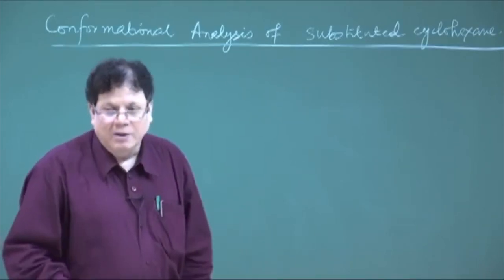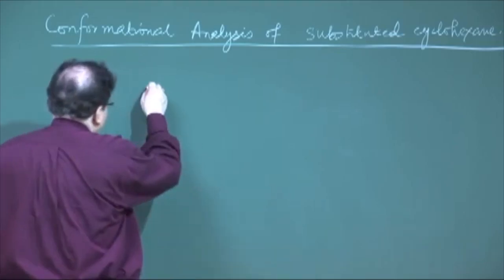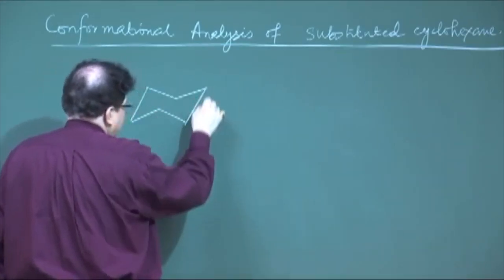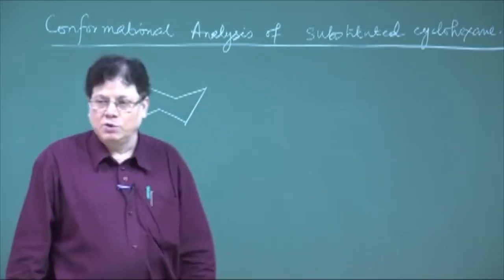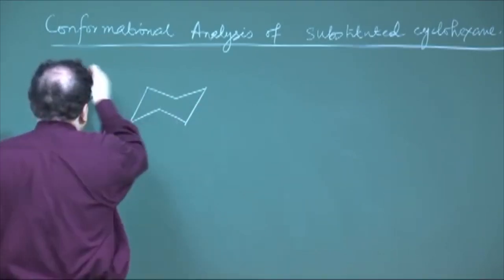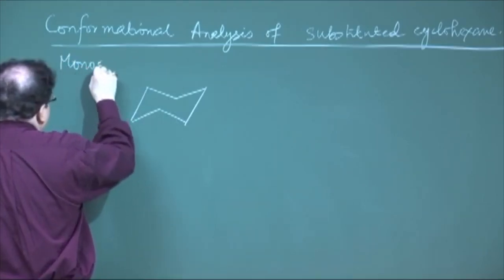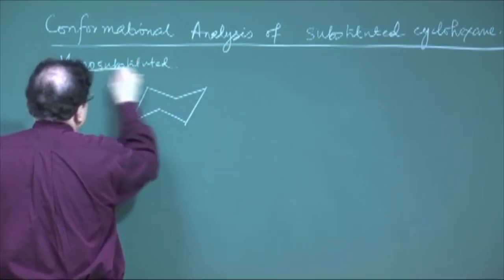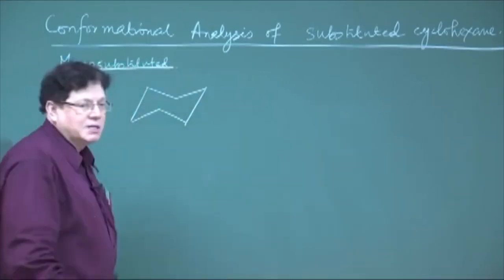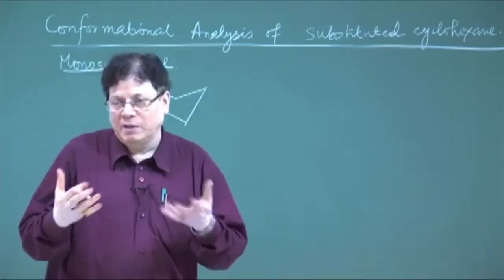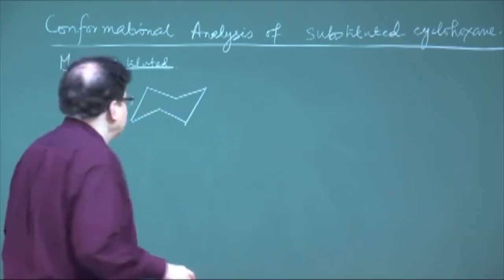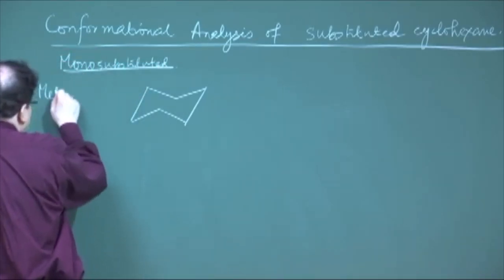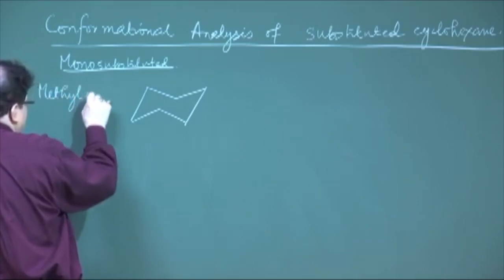Now we will come to cyclohexane when we substitute one of the hydrogens with, say, an alkyl group. So we will come to the mono-substituted cyclohexane — how the energy changes and which position the substituent will occupy, whether axial or equatorial. Let us take the simplest of all: methylcyclohexane.